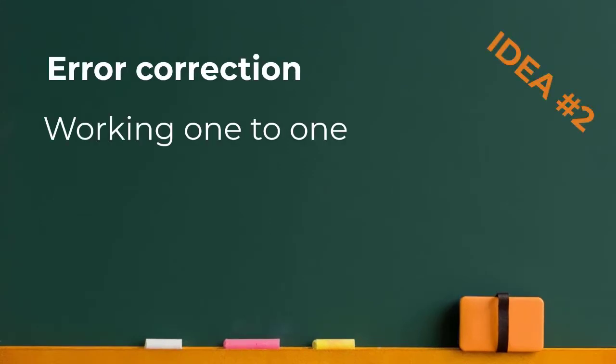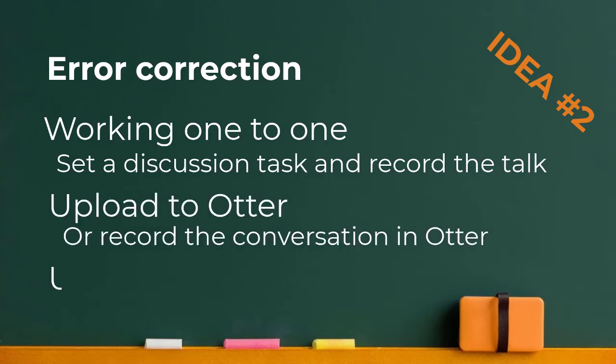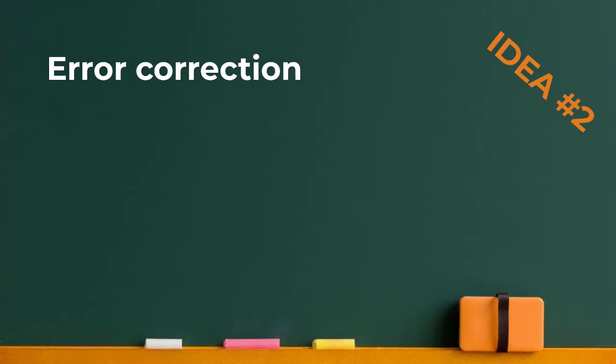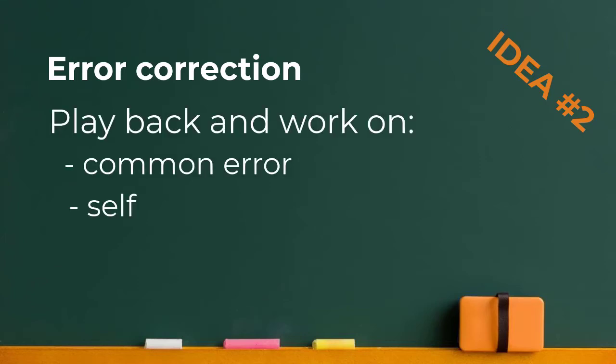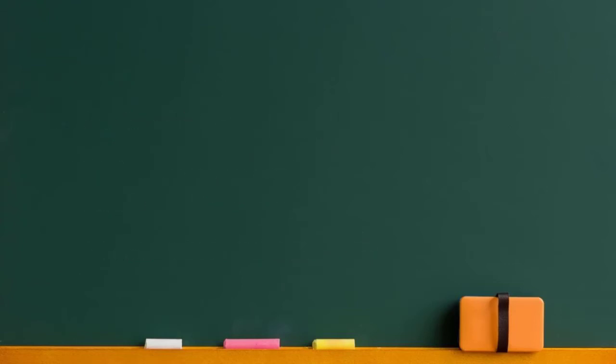Error correction. If you're teaching one-to-one or in small groups it's a great way to work on individual error correction. You can set up a discussion task and, with the learner's permission of course, record what they say. Then you upload this to Otter and use the transcription to analyse the language that they've been using. You can play back parts to them, show them a script, prompt them to self-correct, and work on emergent language — help them to say what they really wanted to say but in a more natural way. This is much easier if it's slowed down in this transcription way. You could even then repeat the discussion task and give them the opportunity to put this work into practice.